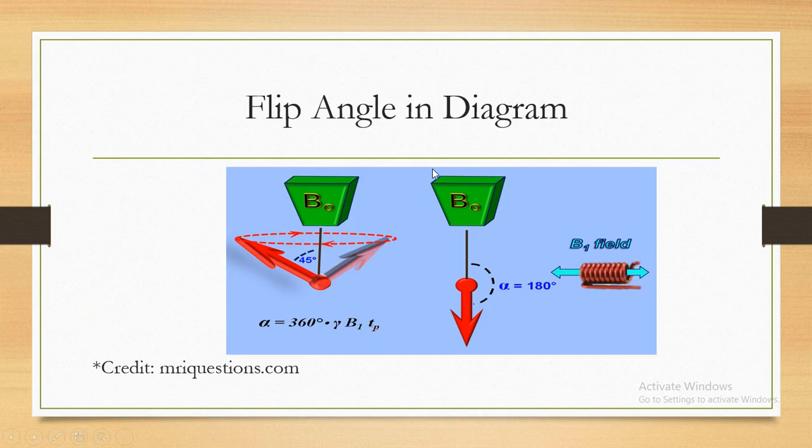Flip angle in diagram. Now let's take a look at flip angle. This is B sub 0 and Z axis and longitudinal axis and alignment. If B sub 0 and static magnetic field is a human body, this is a human body. This is B sub 0 alignment.